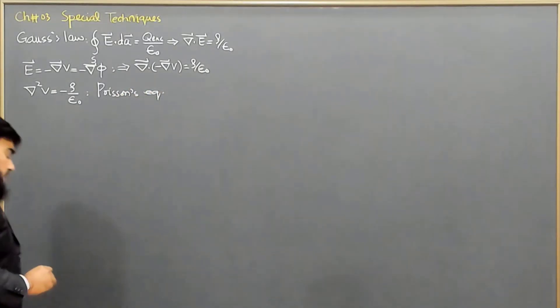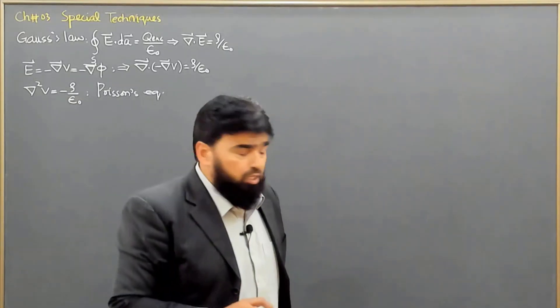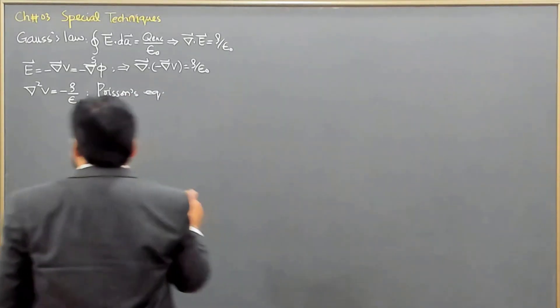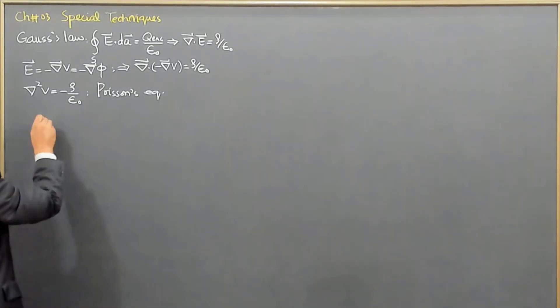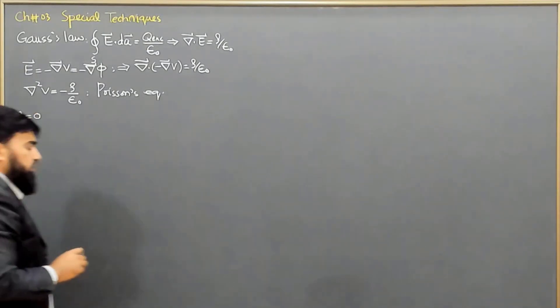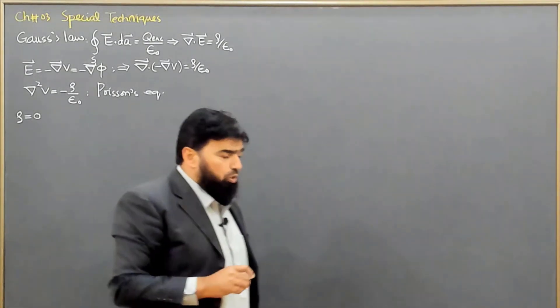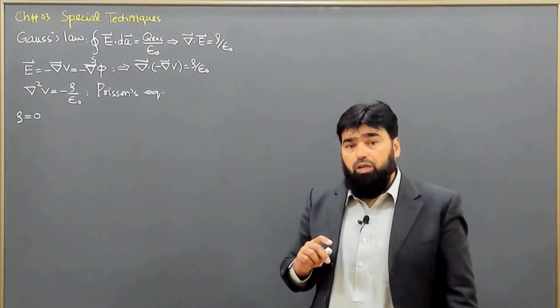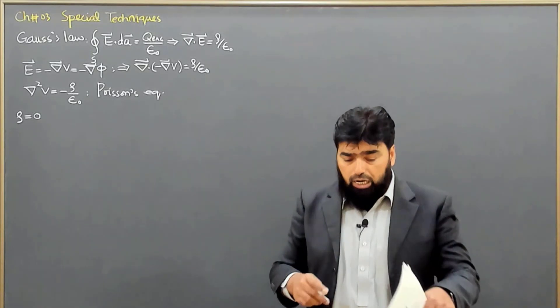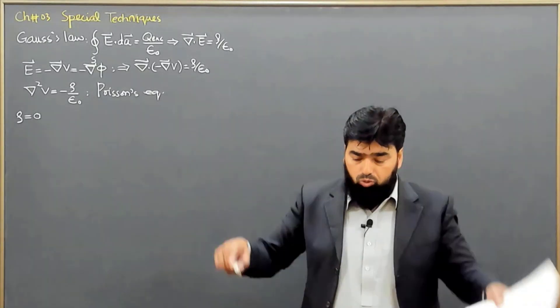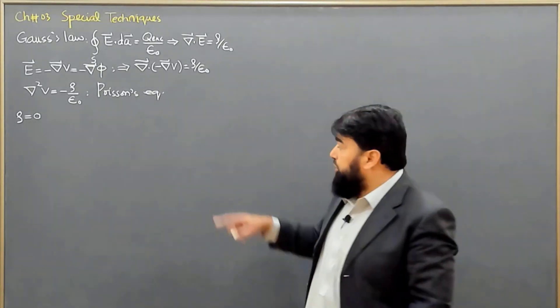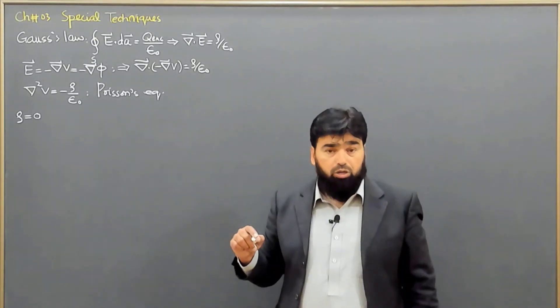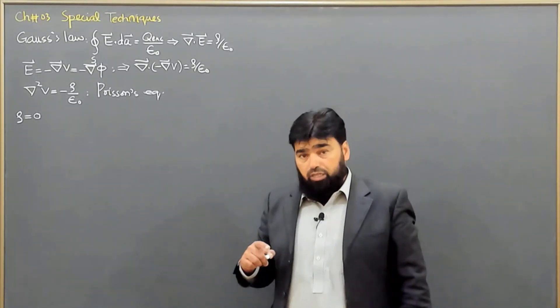And when we will be in a region that where we will have no volume charge, no volume charge density, means the rho is equal to zero there. Now, what is that region? First understand this one. That we are in a region or we are enclosing a region where we don't have any charge involved, but the field is there.